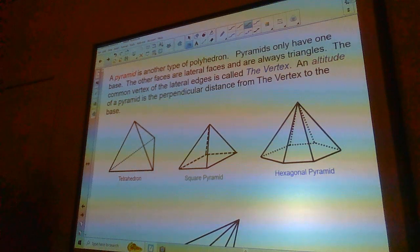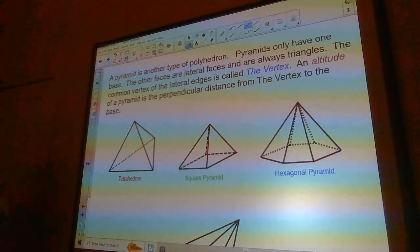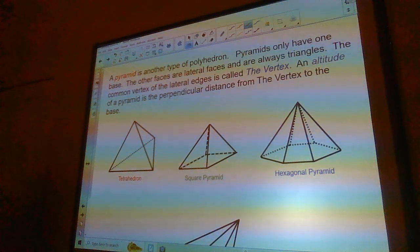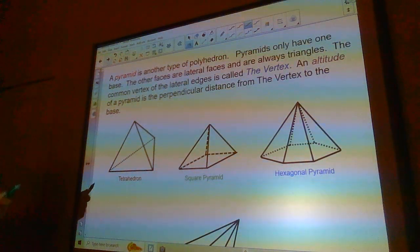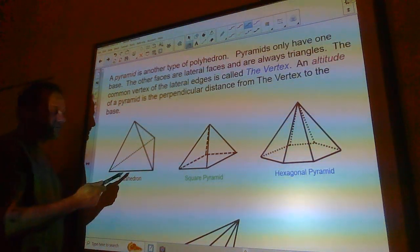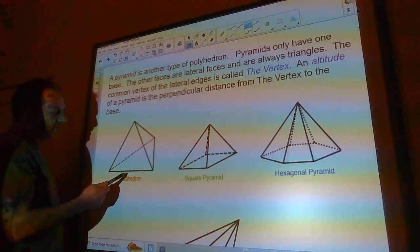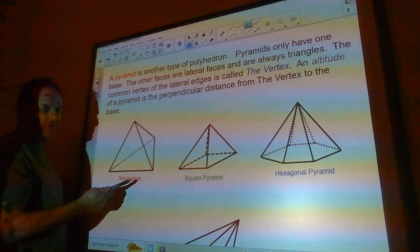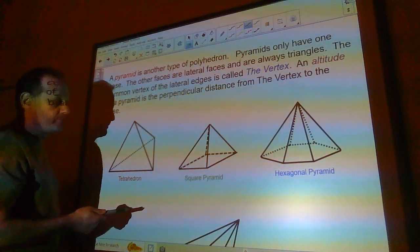A pyramid is another type of polyhedron, but they only have one base. The other faces are lateral faces and they're always triangles. So on this one, all the faces are triangles. And so if you want to know which one is the base, it's usually you say it's the one on the bottom.